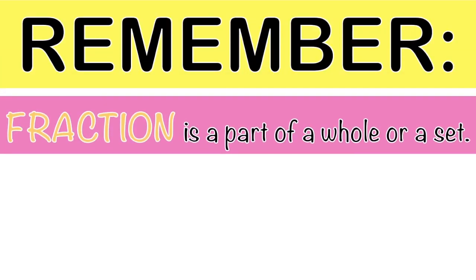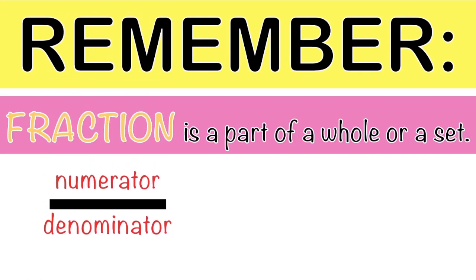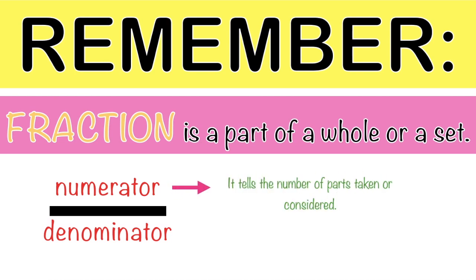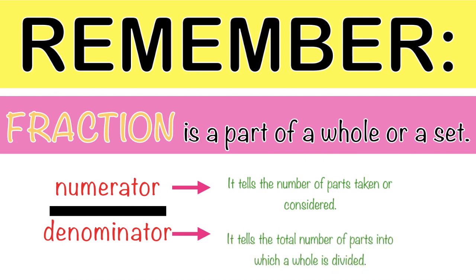Always remember, children: fraction is a part of a whole or a set. The numerator is the number at the top of the fraction bar, while the denominator is the number at the bottom of the fraction bar. The numerator tells the number of parts taken or considered, or the number of shaded parts, while the denominator tells the total number of parts into which a whole is divided. That's all for today, children! I hope you learned something!